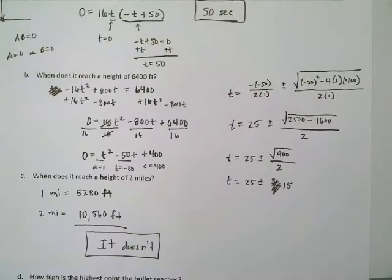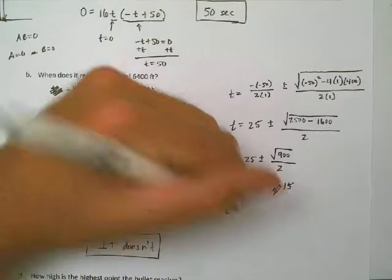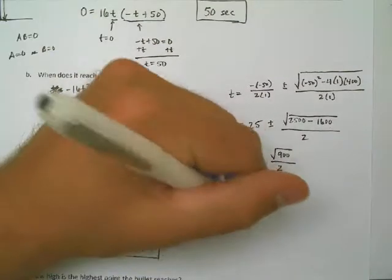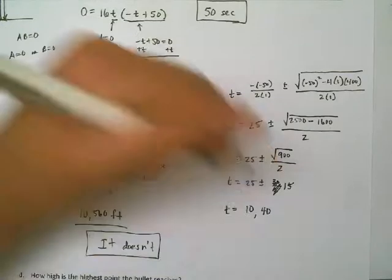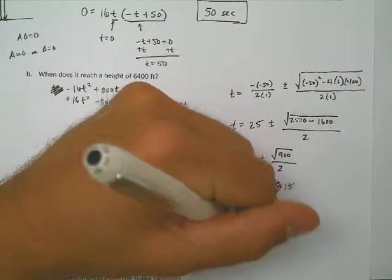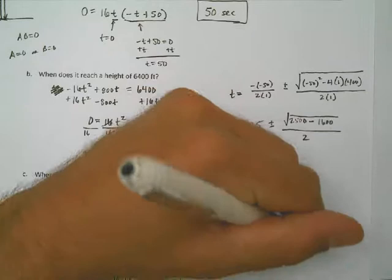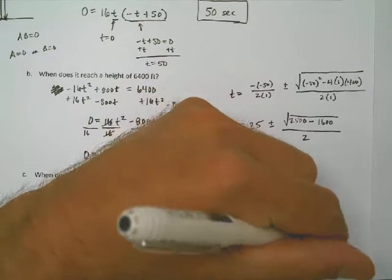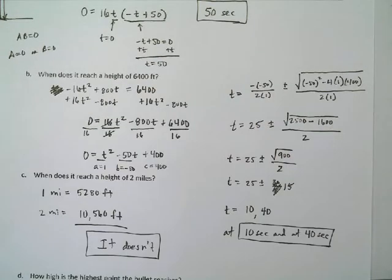which means 25 minus 15 is 10, and 25 plus 15 is 40. So the answer is at 10 seconds and at 40 seconds, and that's after I shoot. That's when it's going to reach a height of 6,400 feet. Alright, hopefully that makes sense. That's a pretty typical word problem. That's a pretty long problem because it's got four parts. That's why it took 10 minutes to do. But if you can do those, I guarantee you can do any problem in our homework or in the chapter.